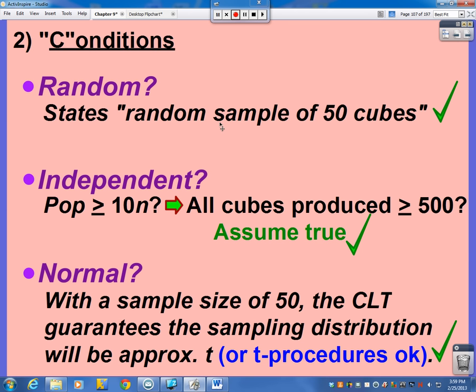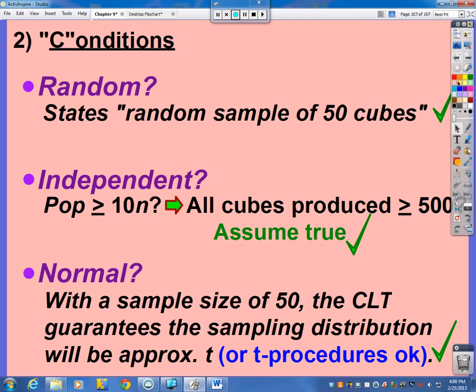Conditions. It did specifically say random sample of 50 cubes, so that checks. Can we assume that there are more than 500 cubes produced? Probably so. I think this is a fairly popular game with kids, so I think we can assume that there are more than 500 made. And is our sample size, or do we have a normal distribution? And again, remember, we're not really talking about normal when we are talking about means. We're really wanting to talk about T.